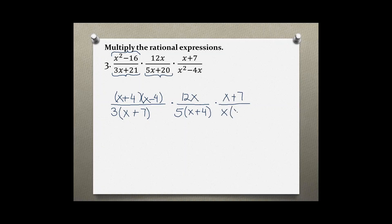So taking out 1x, I'm left with x minus 4. Now I'm ready to cross out all the common factors from top and bottom. So starting here, I got an x plus 4 in the bottom and x plus 4 on top.